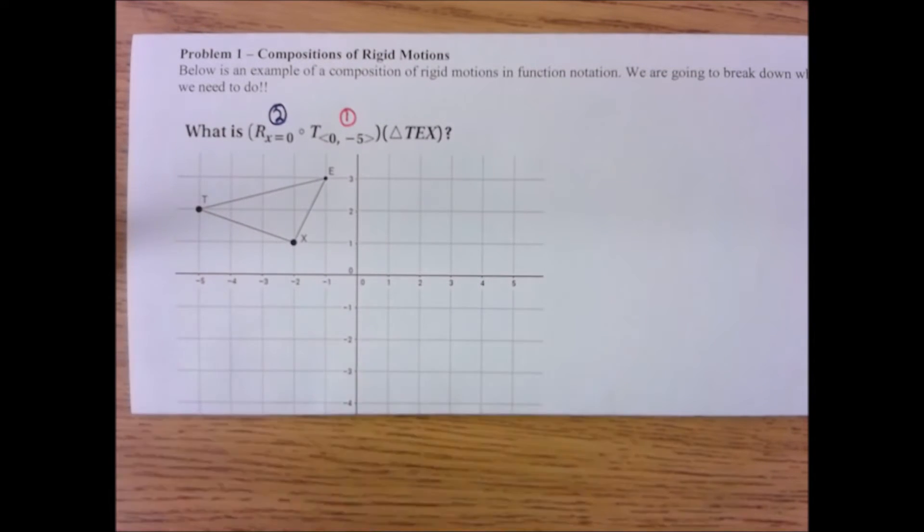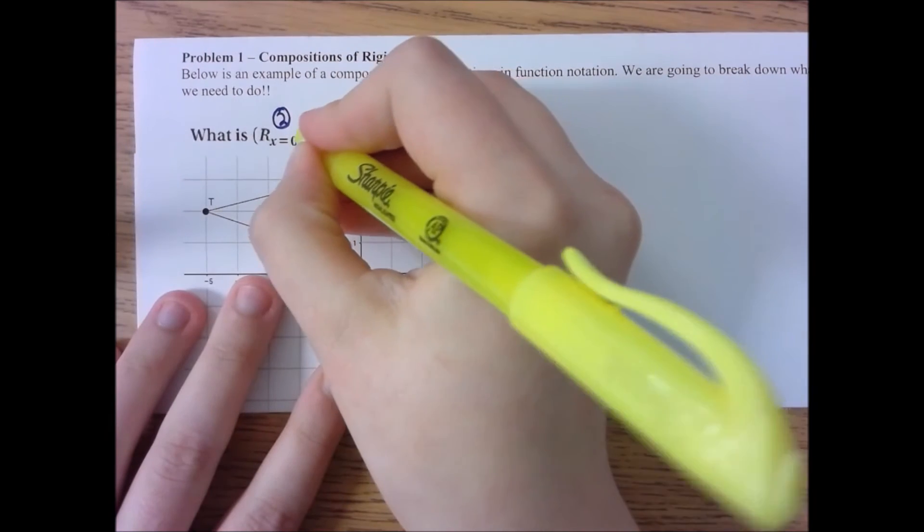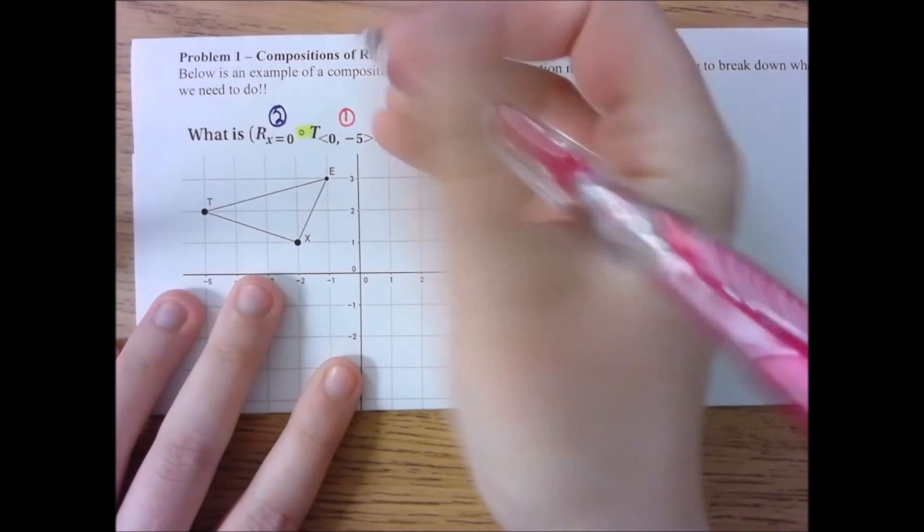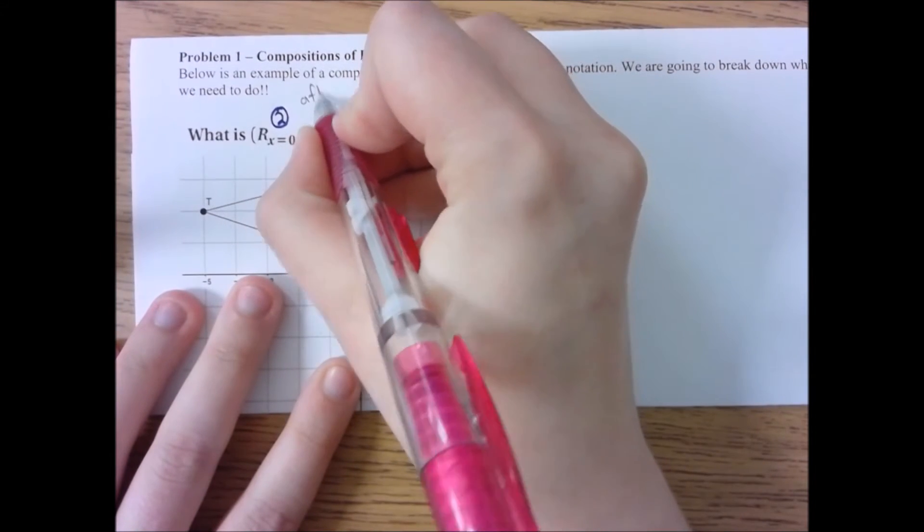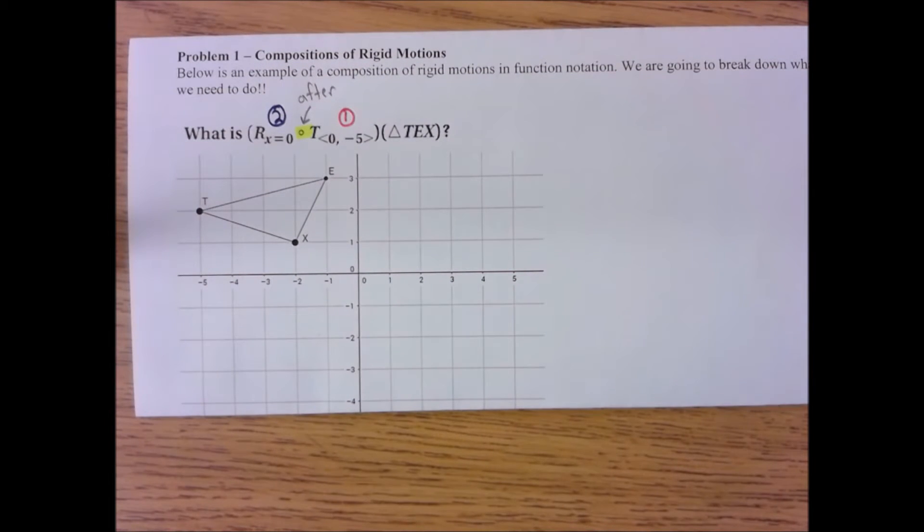And I'm going to highlight really quick. This little dot here means after, I'm going to write that in there just so that we read it that way. After. So reflection over the y-axis after a translation five units down.